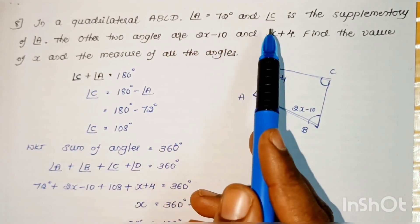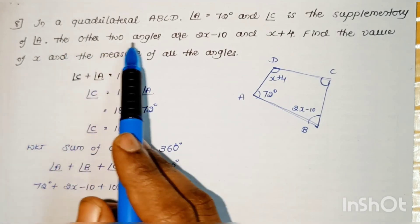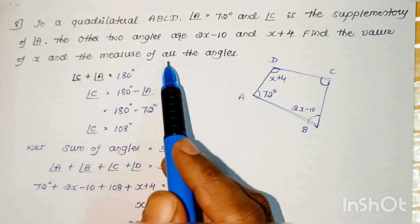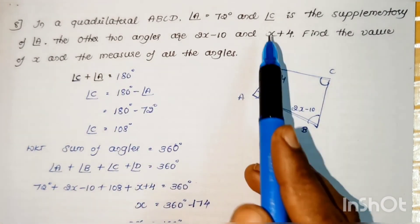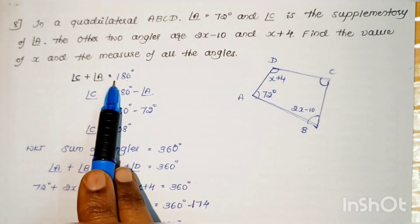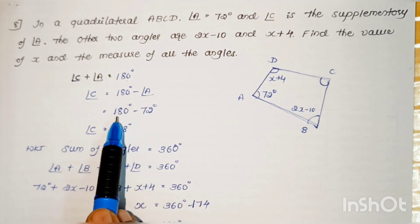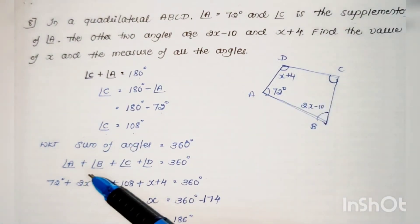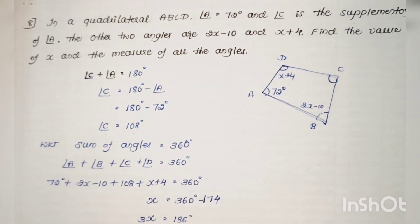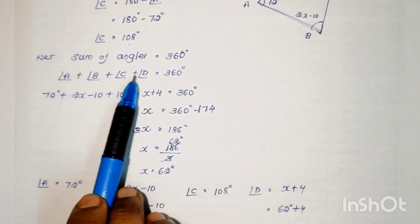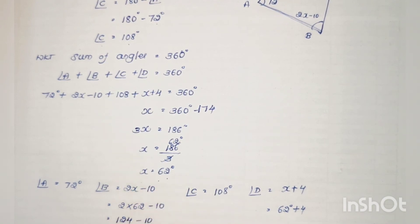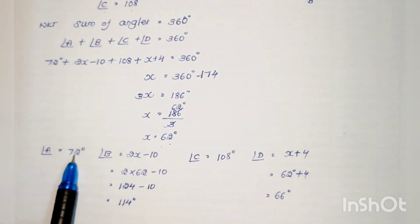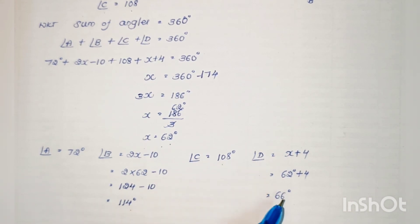Problem: In quadrilateral ABCD, angle A = 72 degrees and angle C is supplementary to angle A. The other two angles are (2x − 10) and (x + 4). Find x and all angles. Since angle C is supplementary to angle A: angle C = 180 − 72 = 108 degrees. Using the sum of angles in a quadrilateral equal to 360 degrees and substituting, we get x = 62. Therefore: angle A = 72°, angle B = 2(62) − 10 = 114°, angle C = 108°, angle D = 62 + 4 = 66°.